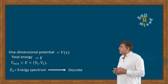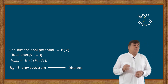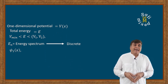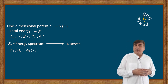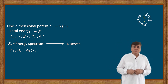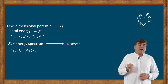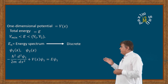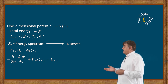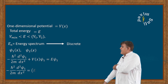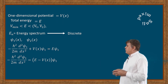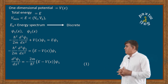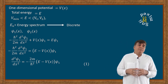The second property of bound states is that the energy eigenfunctions of bound states in a one-dimensional potential are non-degenerate. To prove this, let us consider two energy eigenfunctions ψ₁(x) and ψ₂(x) with the same eigenvalue E. From the time-independent Schrödinger equation for ψ₁, I can write the equation, take the energy eigenvalue to the right side, and simplify it into a final form.